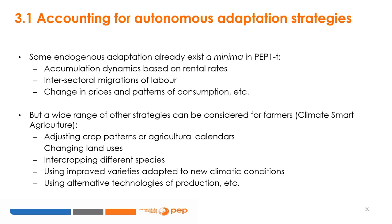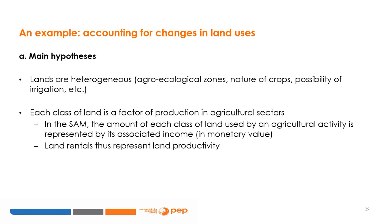However, the reality is more flexible and farmers can employ a wider range of autonomous strategies for enhancing resilience to climate change and variability. In recent literature, these strategies form part of the so-called climate smart agriculture. There is a wide range of options such as adjusting crop patterns or agricultural calendars, changing land uses, using improved varieties adapted to new climatic conditions, using alternative technologies of production to restore degraded dry lands and increase soil fertility, and so on. Changes in land uses by farmers is an example of an autonomous strategy that can be easily considered with the PEP1T model.